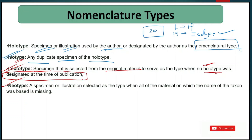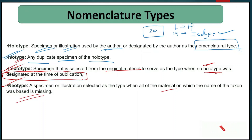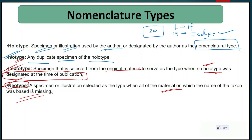Neotype is a specimen or illustration selected as a type when all the material on which the name of the taxon was based is missing — the original specimen is destroyed or lost. In that case, we go to the field and collect a new specimen to represent it as a holotype. That new specimen is known as a neotype.